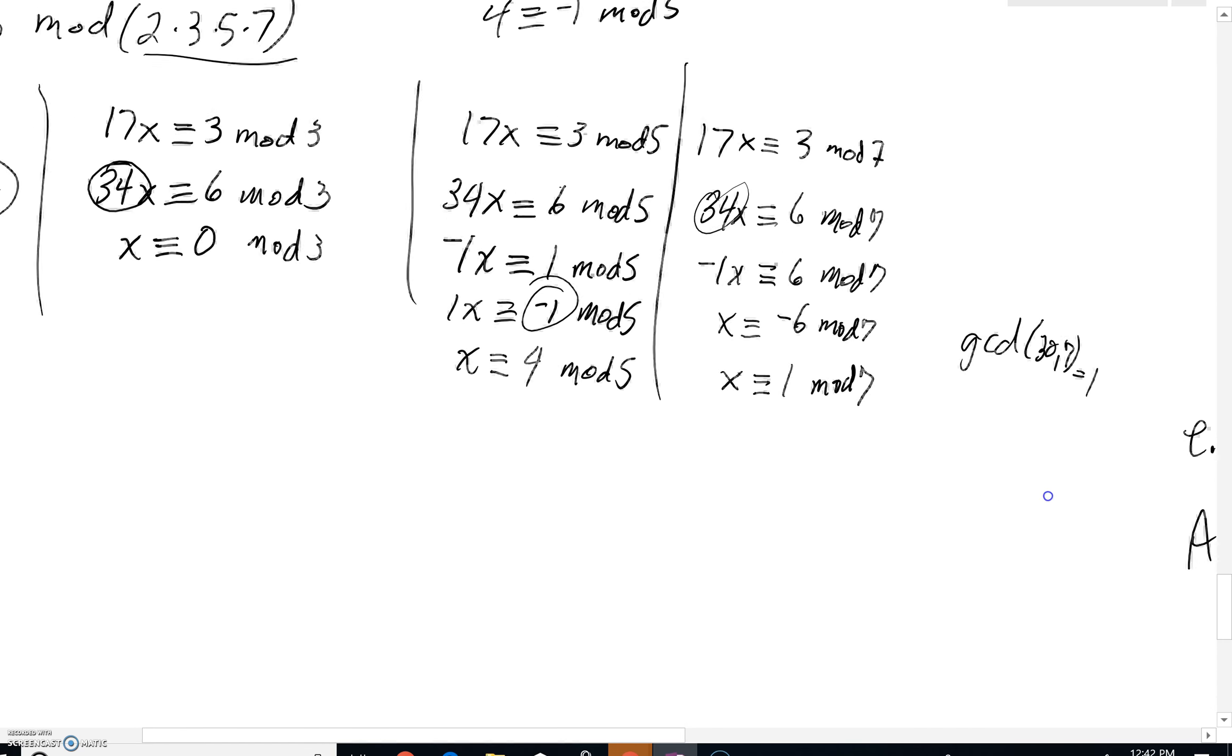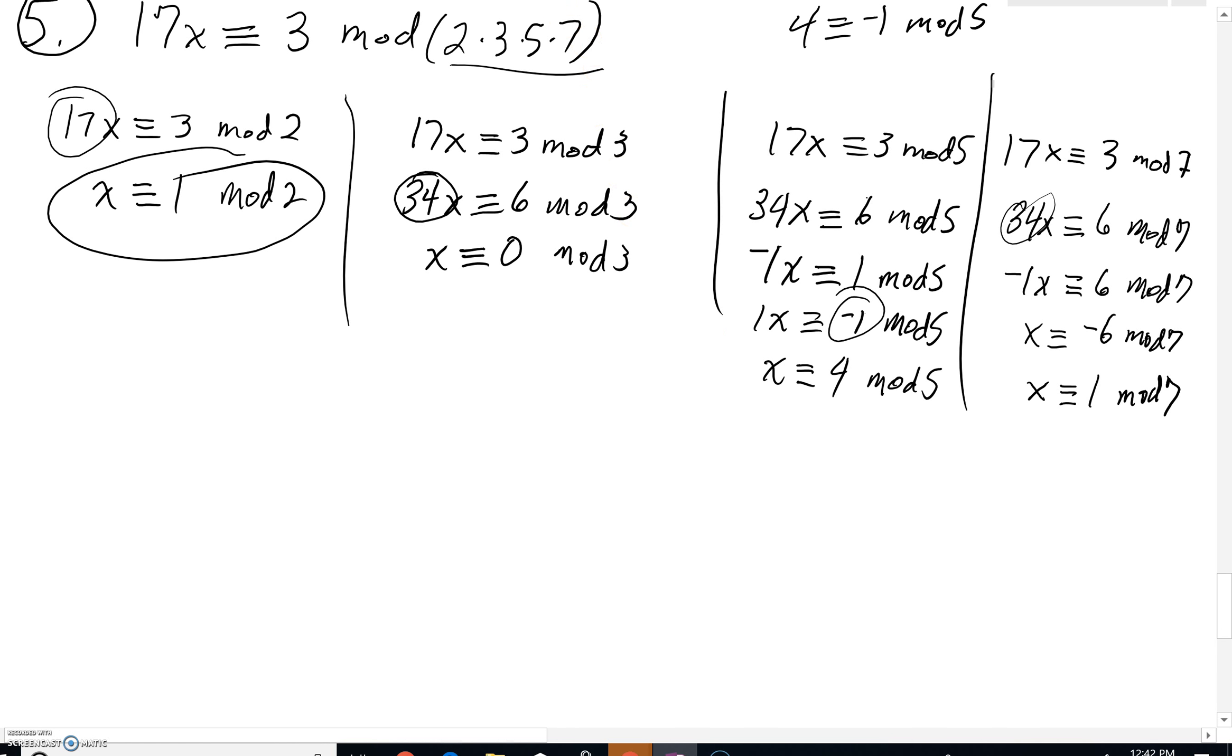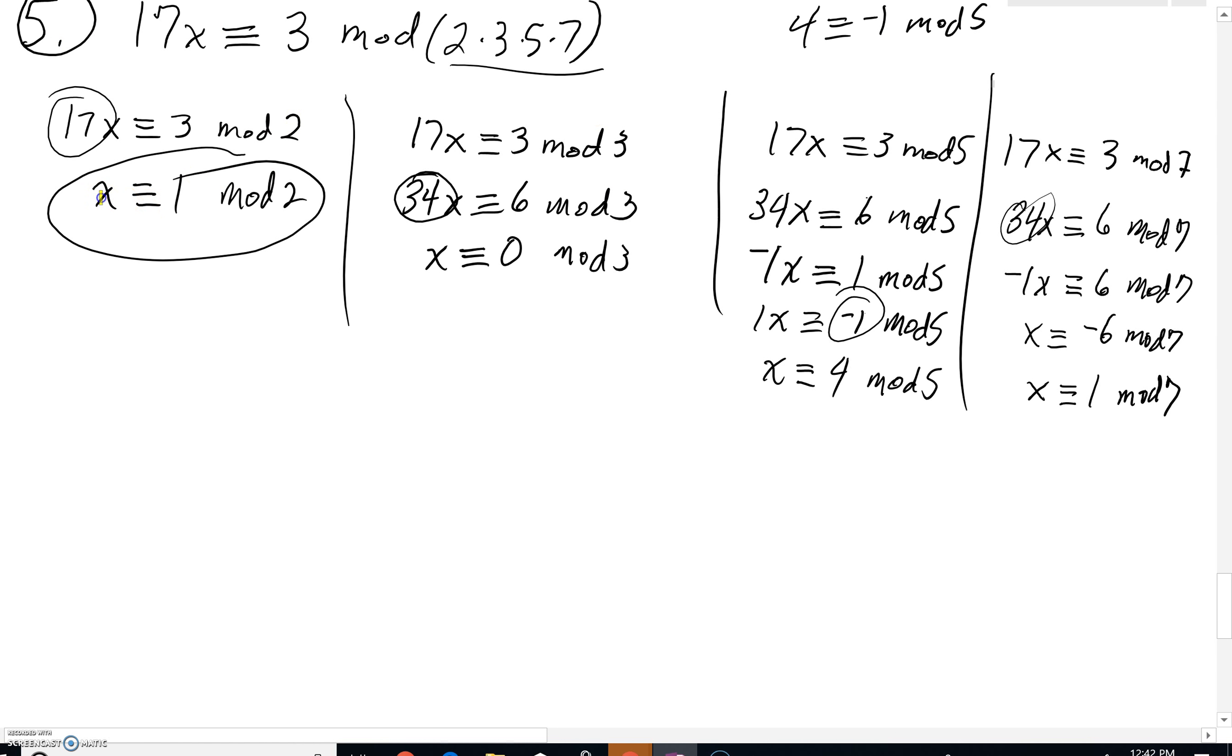So let's go back and quickly see what is going on with the Chinese Remainder Theorem. The Chinese Remainder Theorem says once you get to here, once you have your simultaneous equations, we've got four of them.